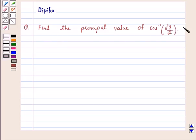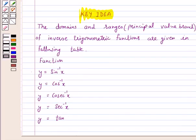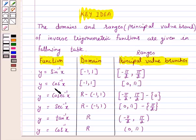First, we will see what is the range of the principal value branch of cos inverse x. The range of y equals cos inverse x, and its principal value branch is the closed interval 0 to pi.